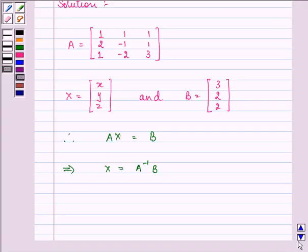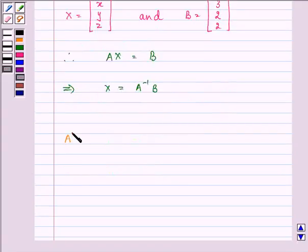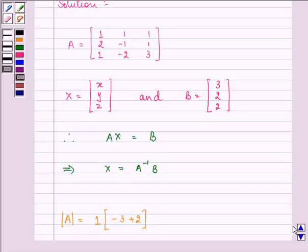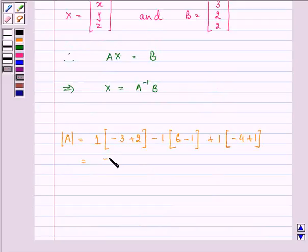Let us find the value of determinant A. That equals 1 times (minus 3 plus 2) minus 1 times (6 minus 1) plus 1 times (minus 4 plus 1). Let us solve it out. We have minus 1 minus 5 minus 3, which is further equal to minus 9.